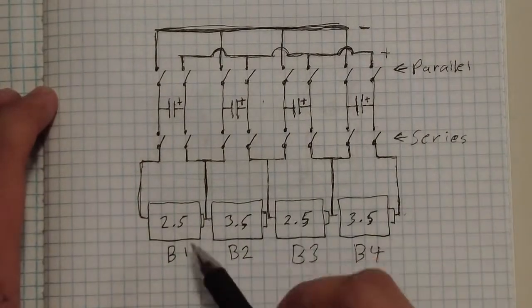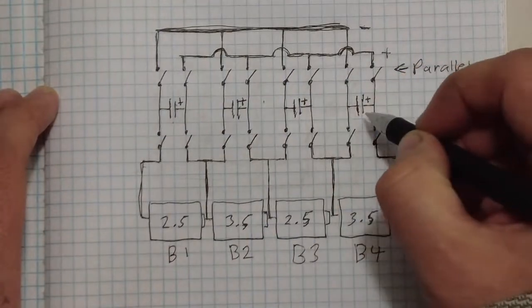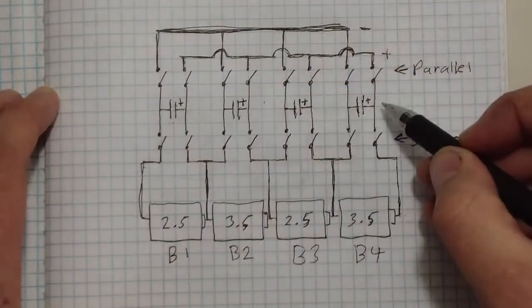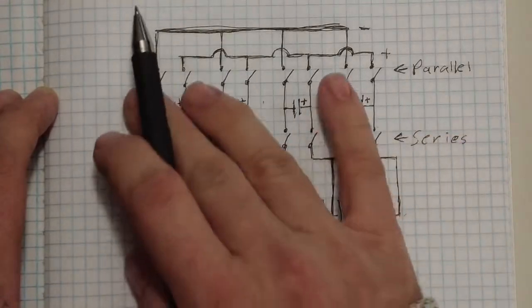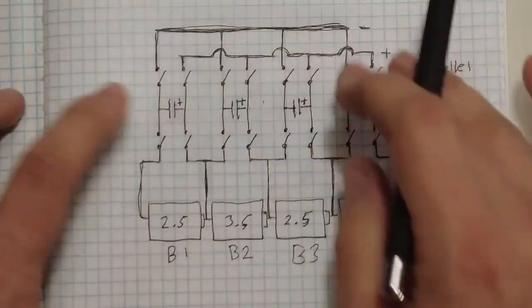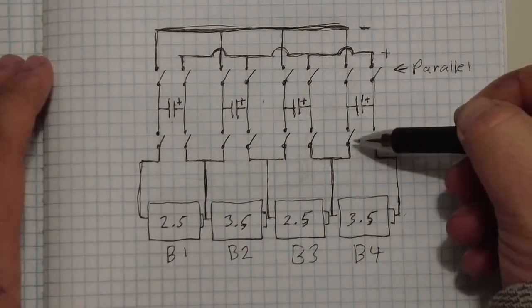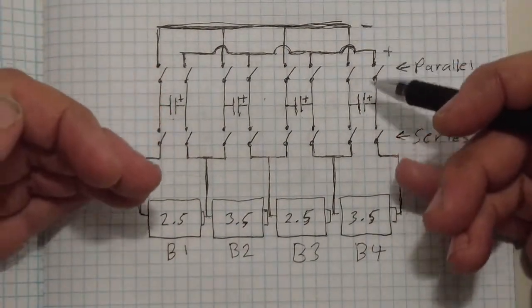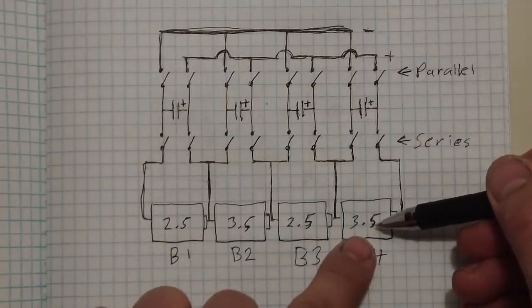So yeah, these will equalize, instead of this one being 2.5, 3.5, 2.5, 3.5, they'll become three. The parallel switches will open. These capacitors will go out of parallel mode. And then the series switches will close. The capacitors will go back into series mode. And then this will be three.